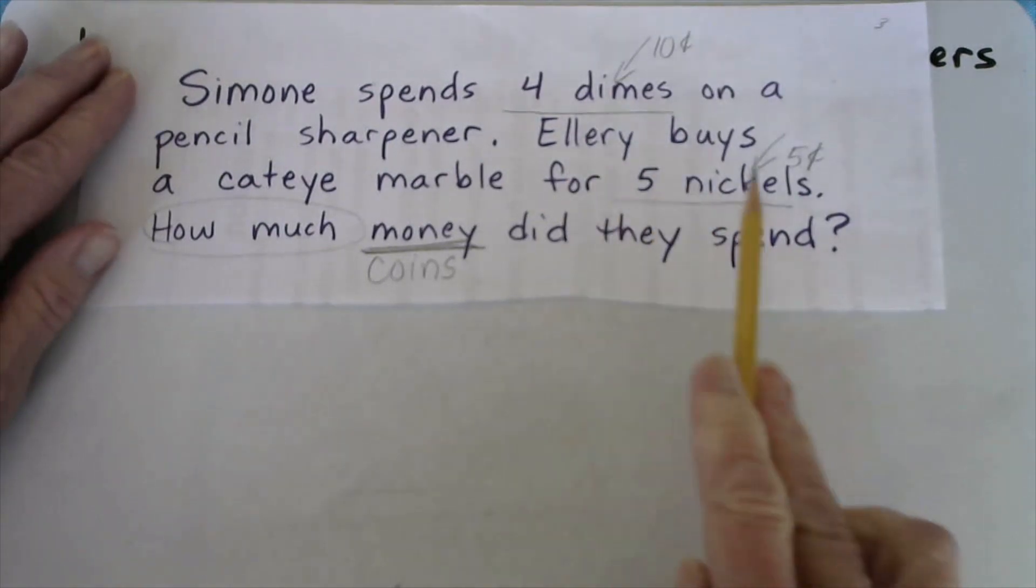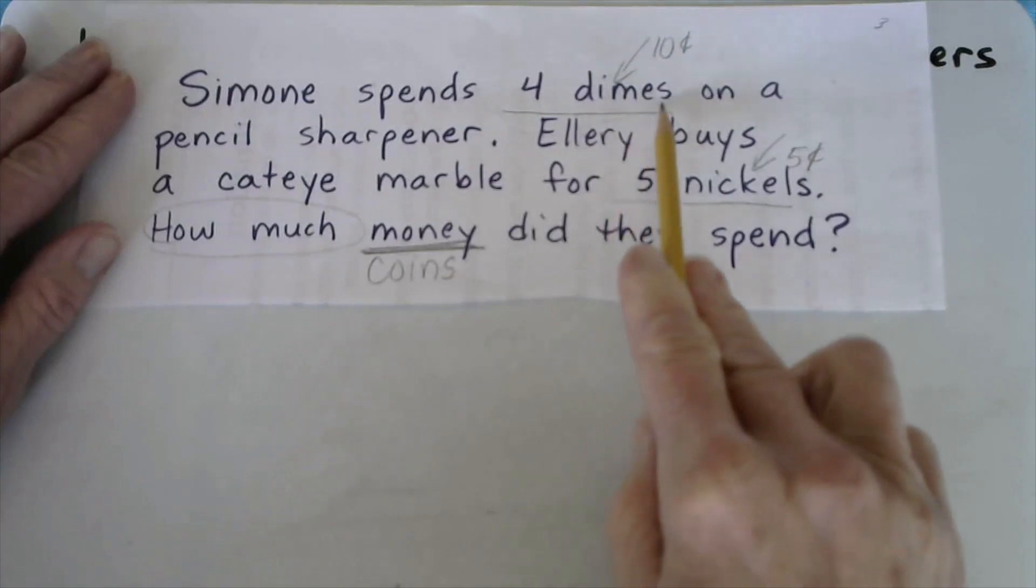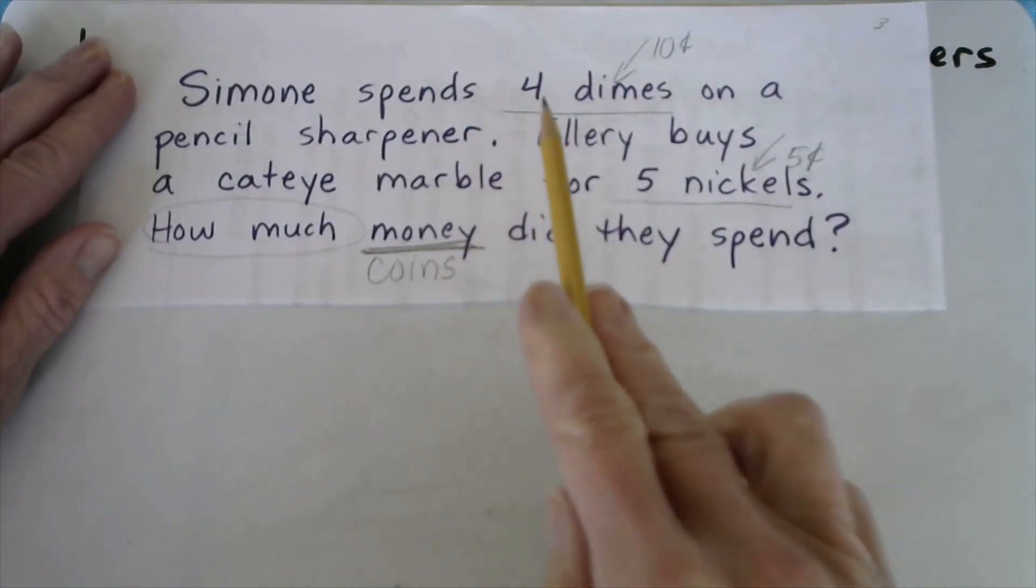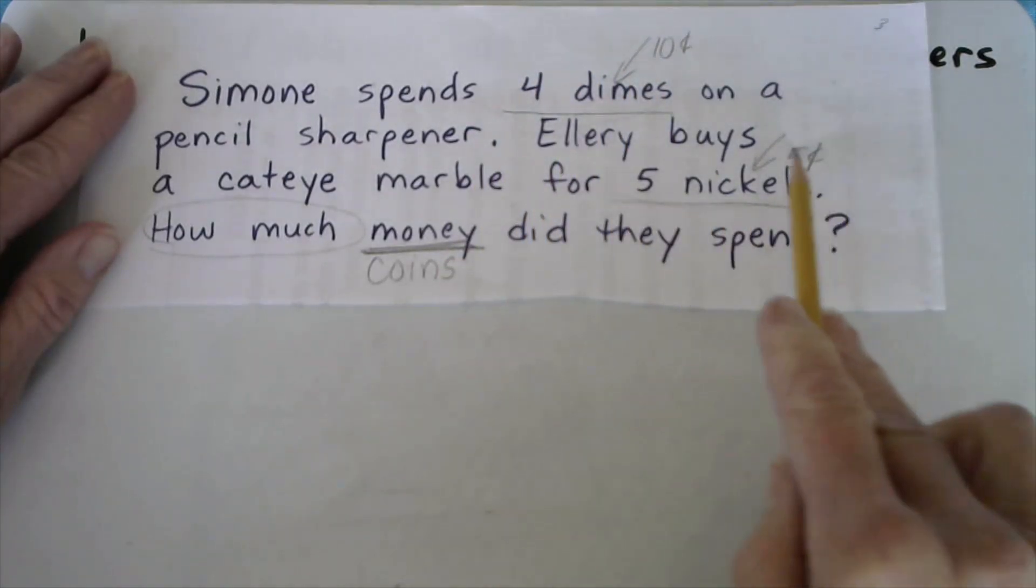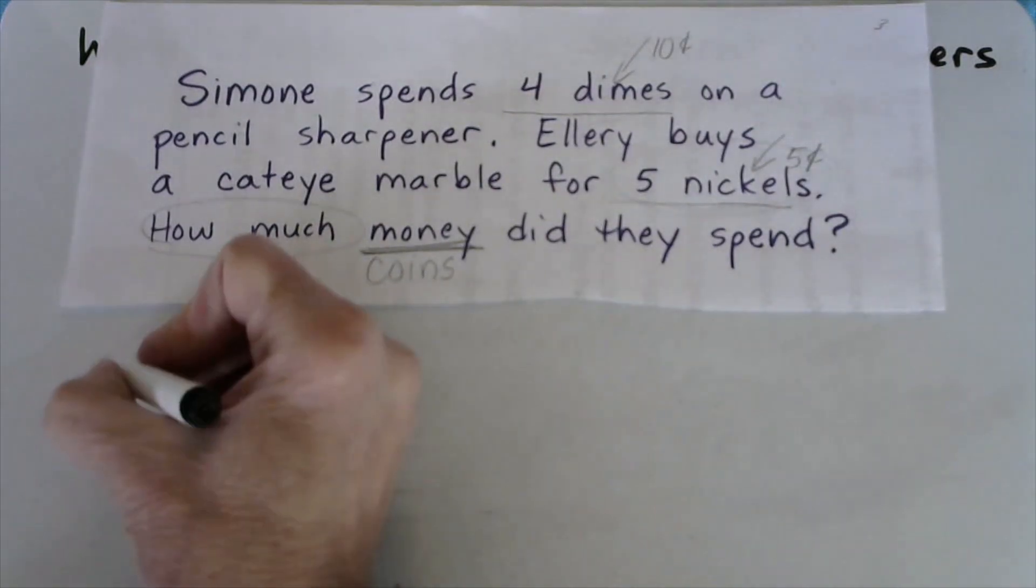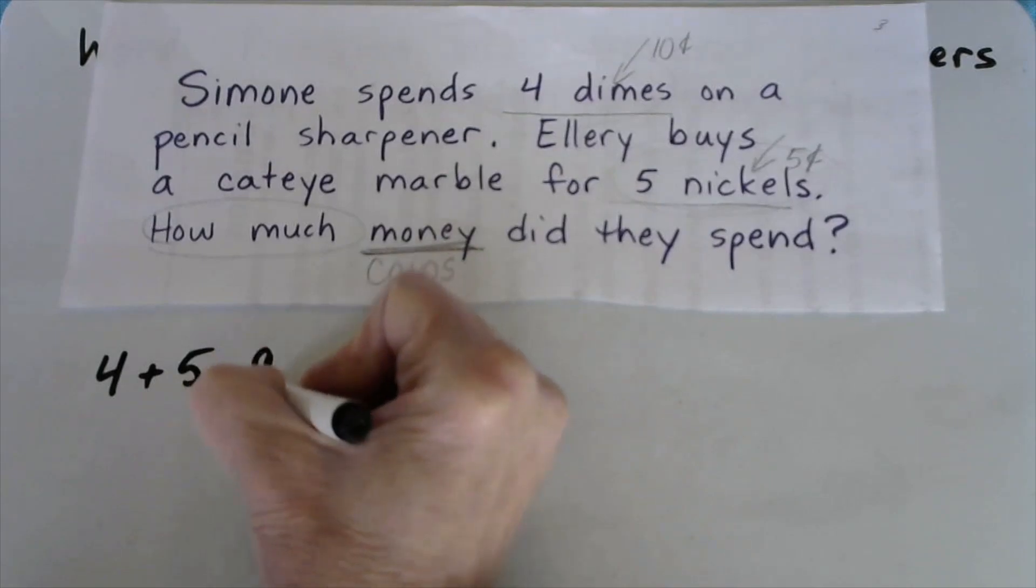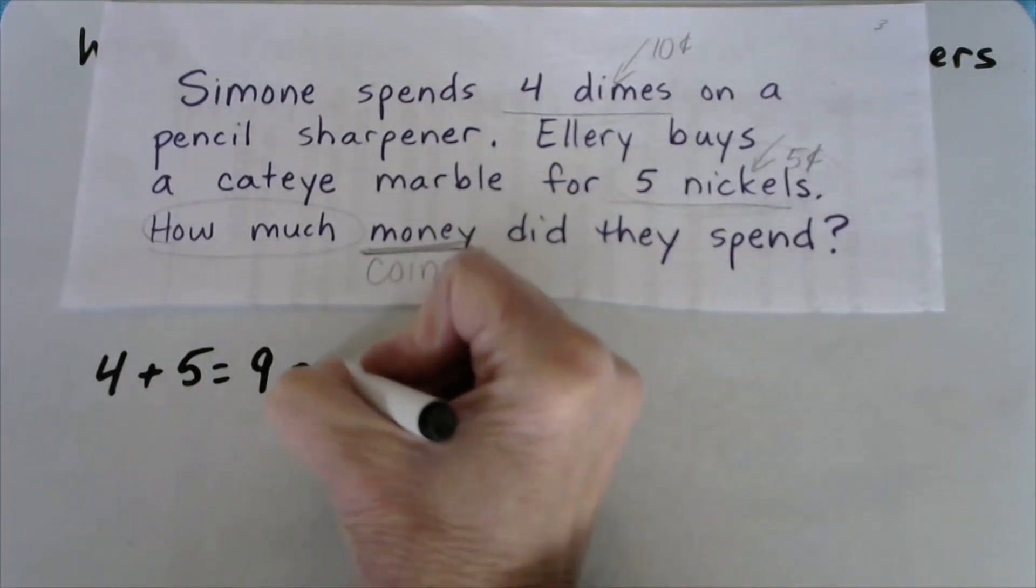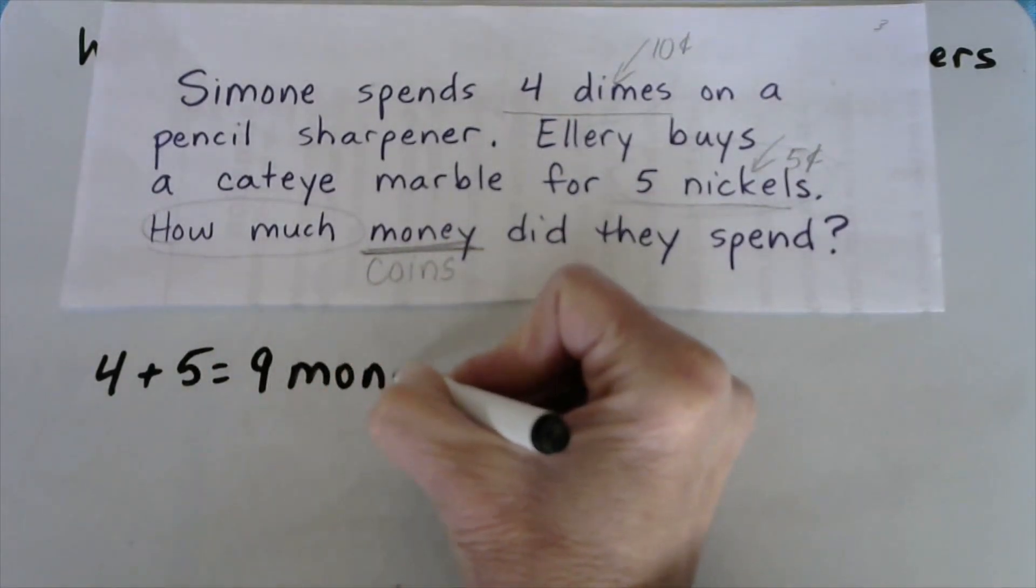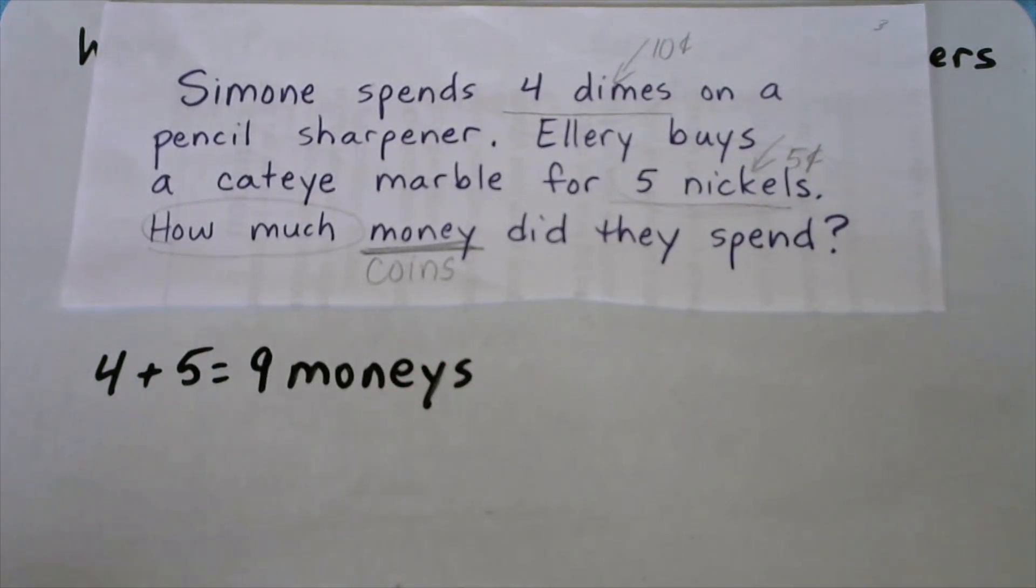So in order to solve this problem, you had to add up the sum of the money inside of Simone's four dimes and the sum of the money inside of Ellery's five nickels. And then you could get an answer in money instead of number of coins. Now you know darn well a math zombie would have written 4 plus 5 equals 9. This person, together, they spent 9 monies. What? That makes no sense.